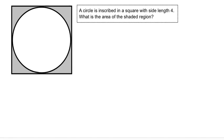The figure shows a square that has a circle in it and the classic shaded region. The question I'm posing to you is: a circle is inscribed in a square with a side of length 4. What is the area of the shaded region?